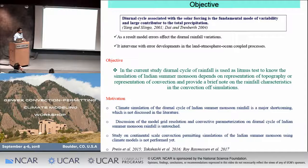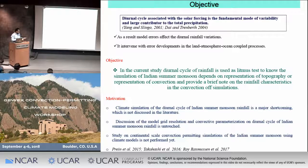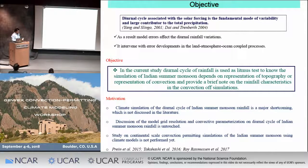Another motivation is that there is no clear study relating diurnal cycle climate simulation to how resolution and convection parameterization affect the diurnal cycle, or how the diurnal cycle impacts total rainfall. Also, convection-permitting simulation has not been attempted for this region, so this will potentially be the first such study.